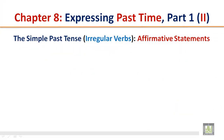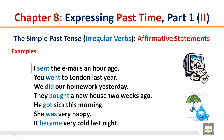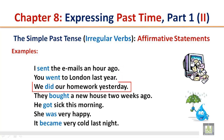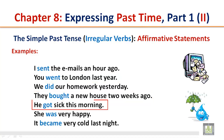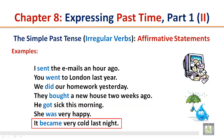The simple past tense — irregular verbs, affirmative statements. Examples: I sent the emails an hour ago. You went to London last year. We did our homework yesterday. They bought a new house two weeks ago. He got sick this morning. She was very happy. It became very cold last night.